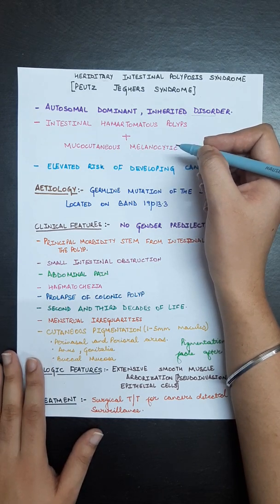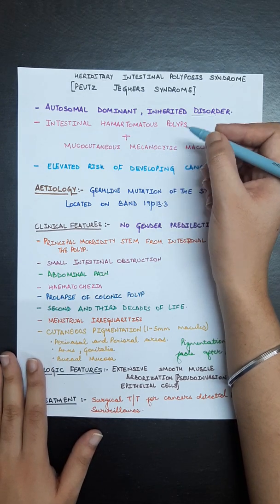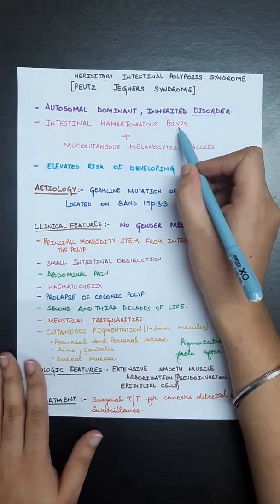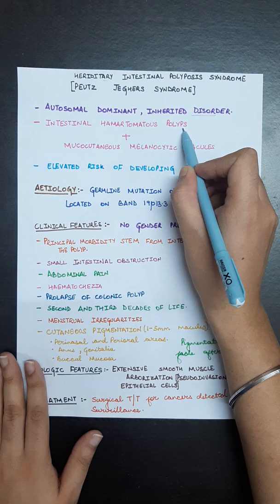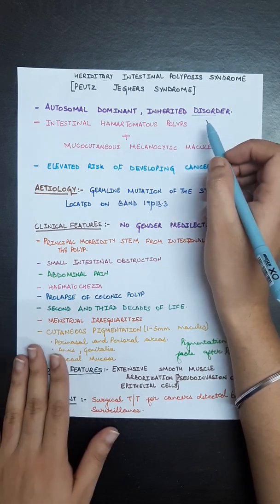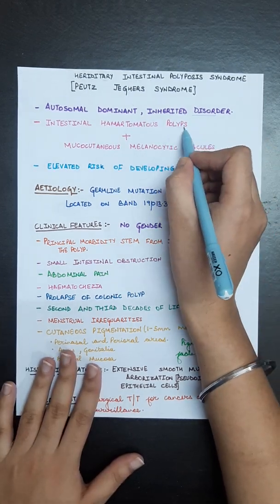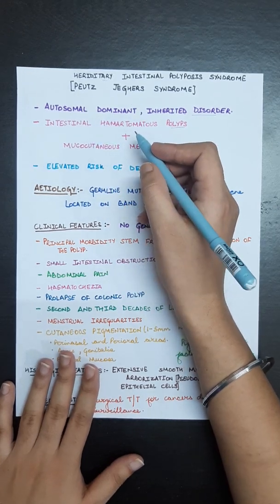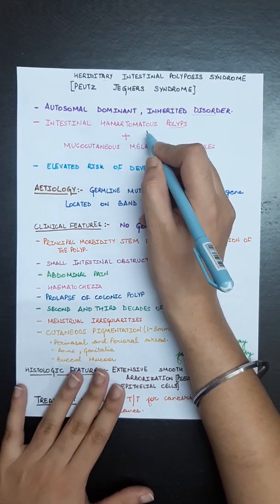In this syndrome, there are two things to remember. Firstly, there is intestinal hamartomatous polyp formation in the intestine. What is the meaning of hamartoma?